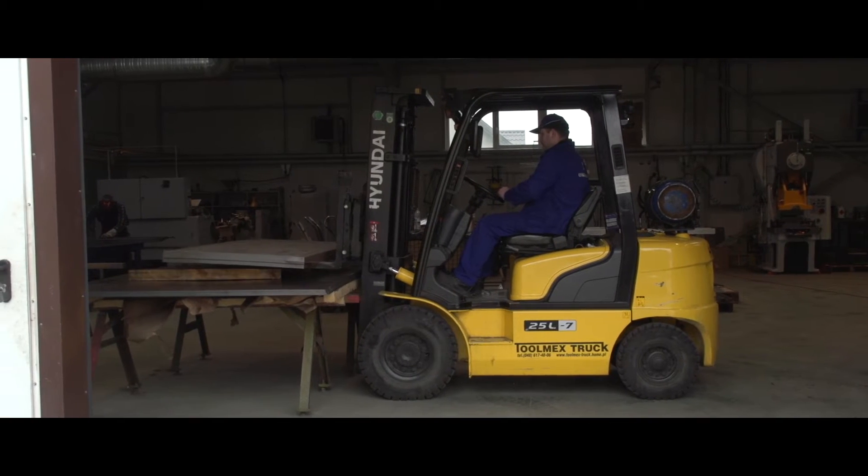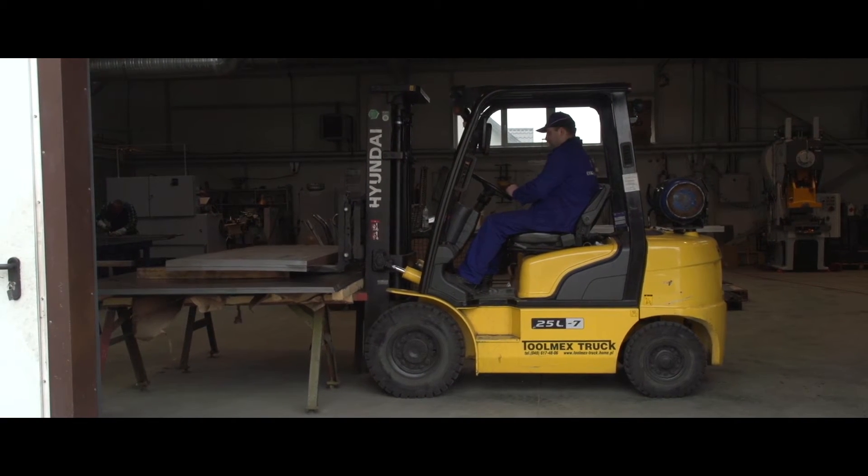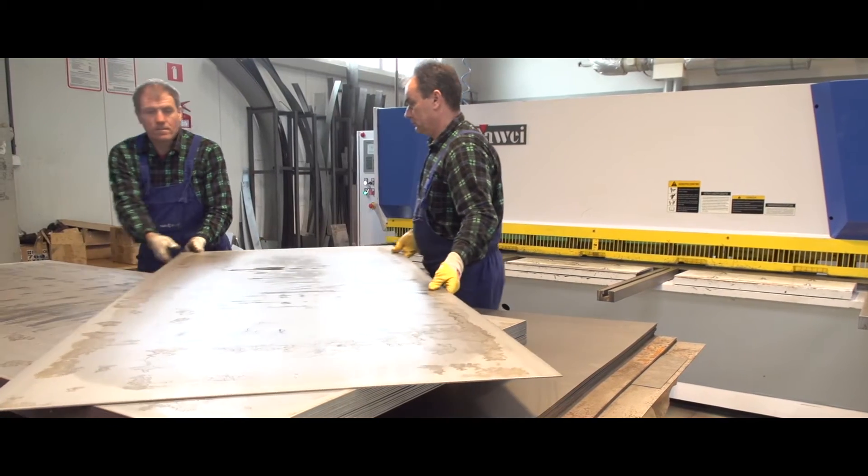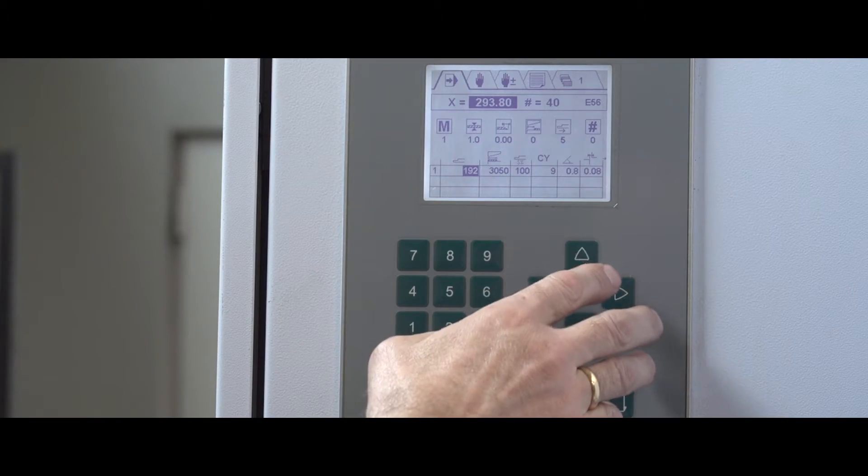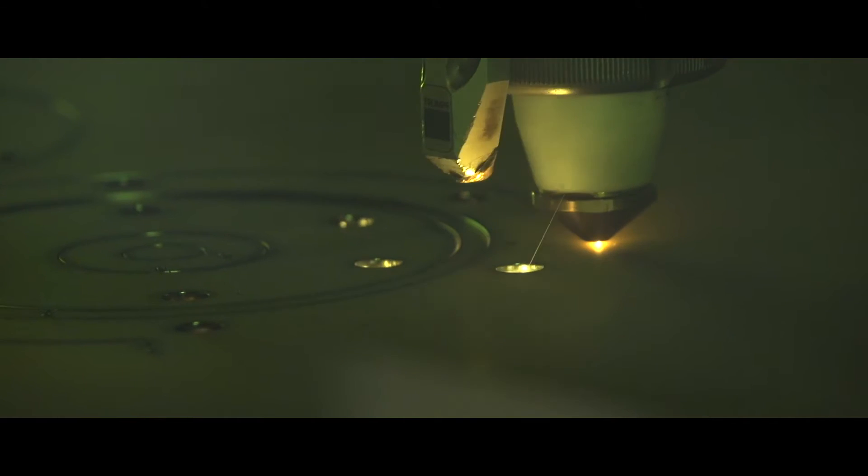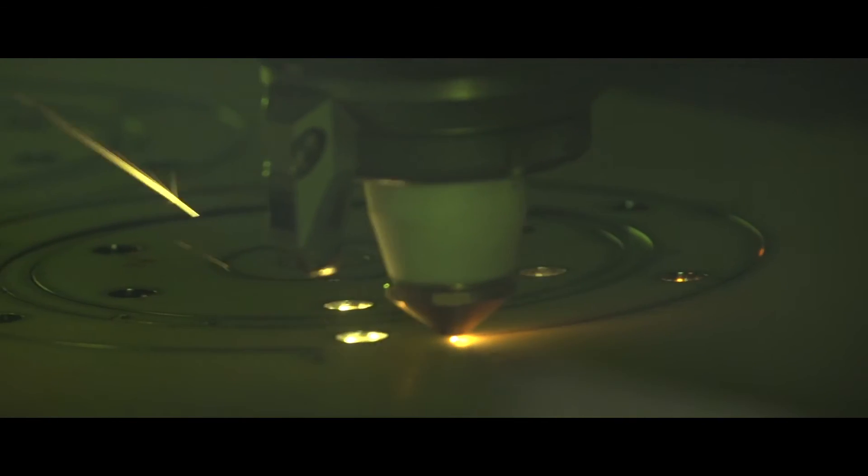Przywieziona blacha jest składowana, następnie trafia na gilotynę. Następuje tu cięcie blachy na pasy. Jeśli zaistnieje taka potrzeba stosujemy wycinanie laserowe. Prędkość wycinania jest uzależniona od grubości blachy i rodzaju materiału.